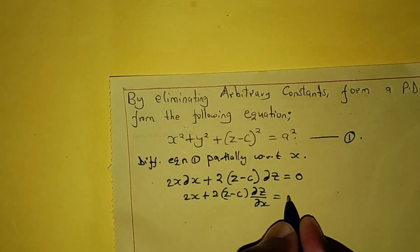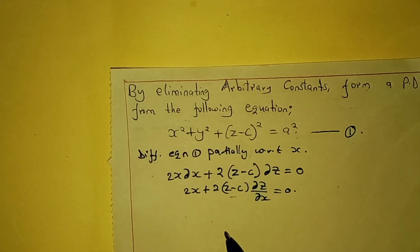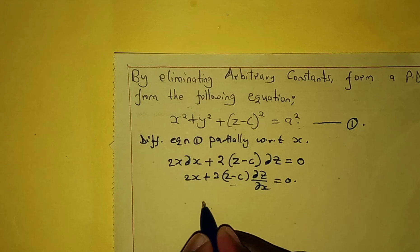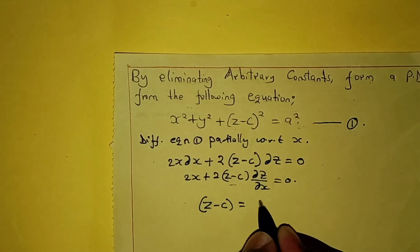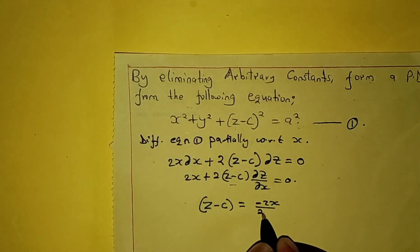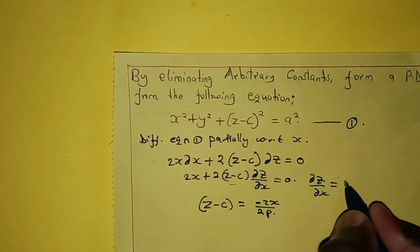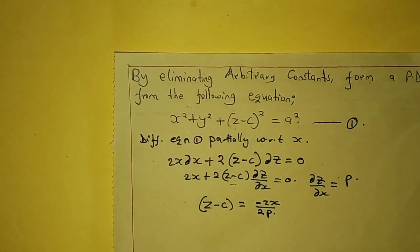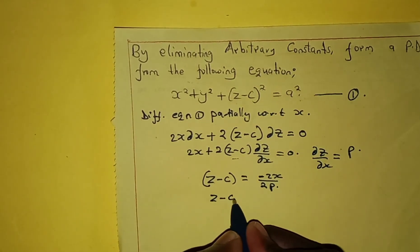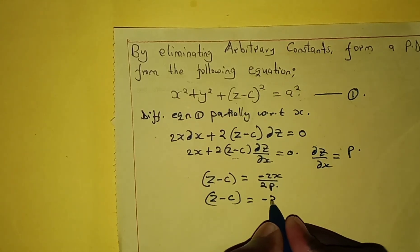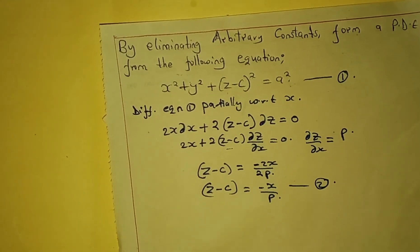Partial z over partial x equals zero. So we make z minus c the subject and we get z minus c equals negative 2x over 2p. Of course, partial z over partial x is equal to p. So z minus c equals negative x over p. We call this equation 2.